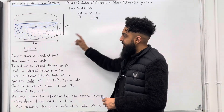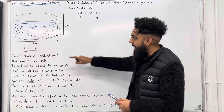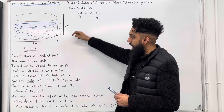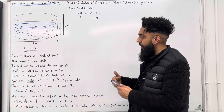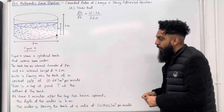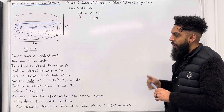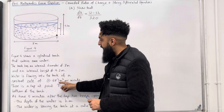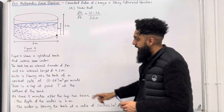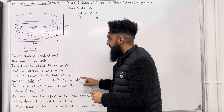Figure 4 shows a cylindrical tank that contains some water. The tank has an internal diameter of 8 metres and an internal height of 4.2 metres. Water is flowing into the tank at a constant rate. The word 'rate' indicates a differential — please look out for the word rate in your examination. The constant rate is 0.6π metre cubed per minute. Always look out for the units: metre cubed per minute indicates dV/dt.